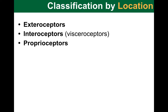Other classification methods of receptors are based on location. We can look at whether the stimulus arises from outside the body, as in the case of exteroceptors, or from the internal viscera or blood vessels — these would be interoceptors, also known as visceroceptors. Or proprioceptors, which respond to stretch in skeletal muscles, tendons, joints, ligaments, and connective tissues.